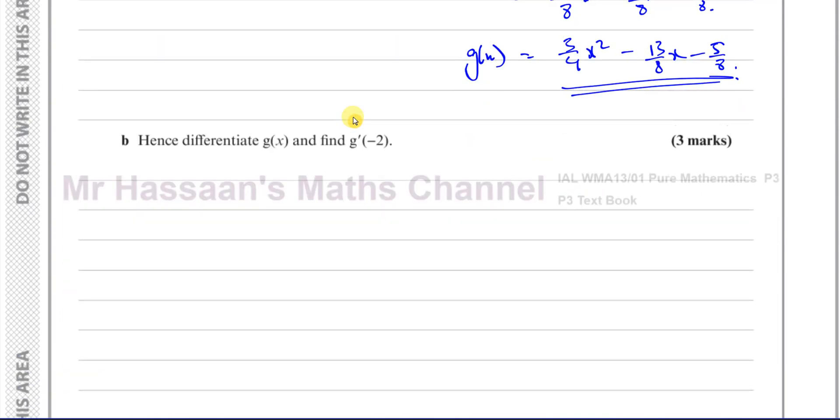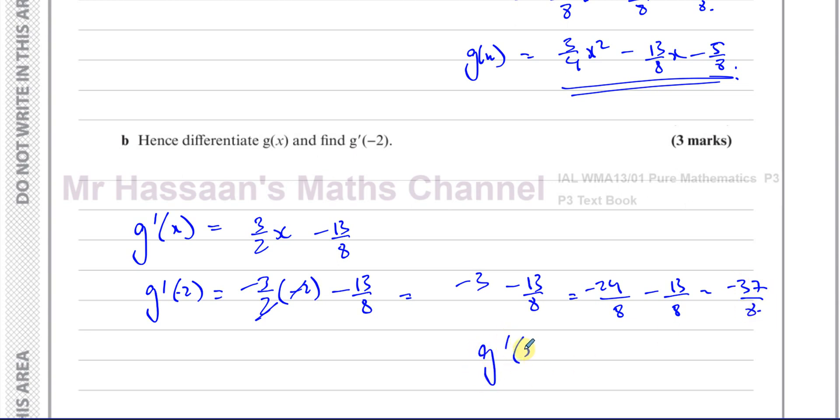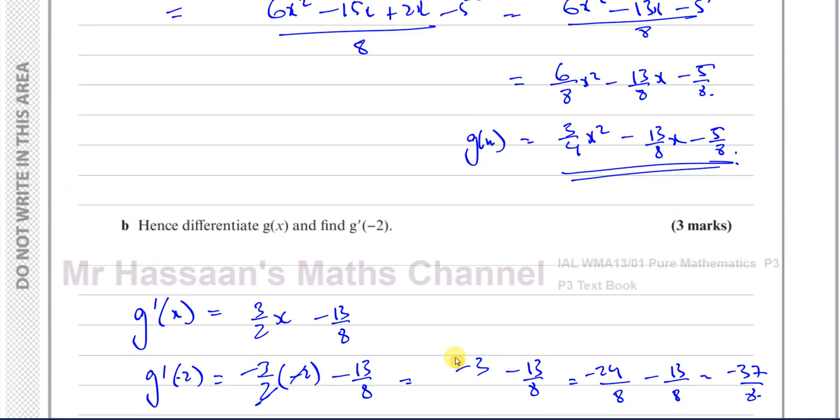Then it says part b, hence differentiate g(x) and find the differential of g(-2). So you have to differentiate this expression and replace the x with -2. This is a simple differentiation from P1, where you multiply by the power. So it's 2 times 3/4, which is 3/2 x - 13/8. You multiply by the power, take one from the power here. You just drop the x. The constant becomes 0. So we can say g'(-2) is going to be 3/2 times -2 - 13/8. They cancel out, so you're left with -3 - 13/8, which I can write as -24/8 - 13/8. That's -37/8. So the differential of g(-2) is -37/8. And there is the answer to part b, and that concludes this question.